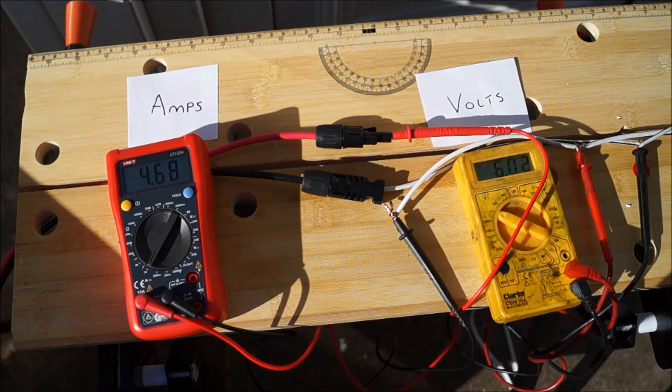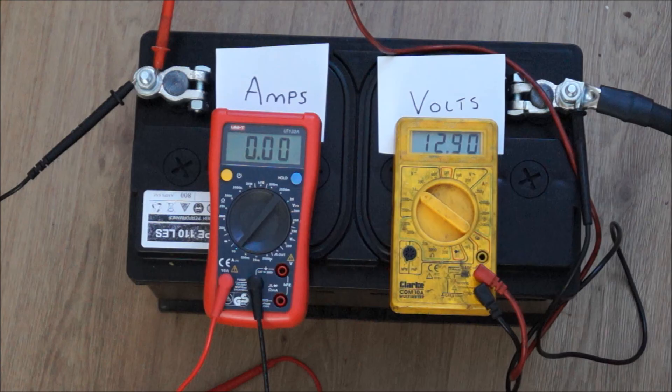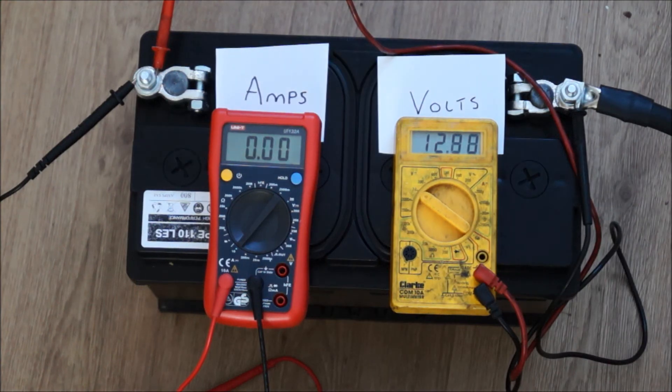Inside now, connected up to the single battery, we've got the multimeter set up the exact same way. On the right, the volts showing the standing battery voltage about 12.9 volts. On the left we've got the amps, no draw at the moment because the inverter is switched off, but what we're going to do is switch the inverter on.